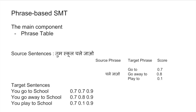So the target sentence can be 'you go to school,' 'you go away to school,' or 'you play to school,' and they have different scores. According to the phrase table, 'you go away to school' may have a higher score than 'you go to school.' Here the language model plays an important role — phrase-based statistical machine translation uses the language model to select the correct output, 'you go to school.'